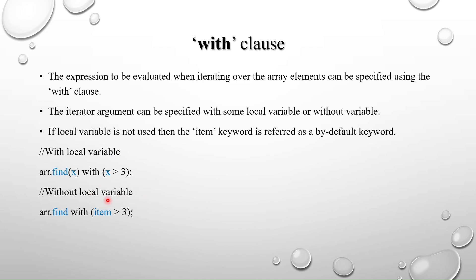Without a local variable, we use the 'item' keyword. The 'item' keyword is the default keyword used when we don't specify a local variable. These are the two ways we can use the with clause.